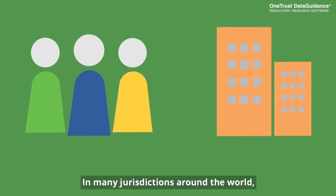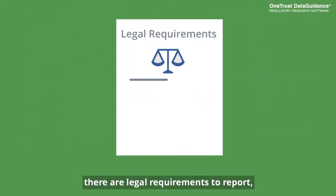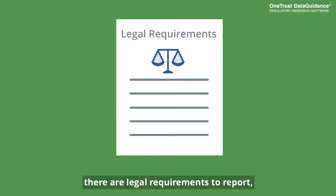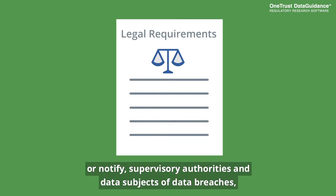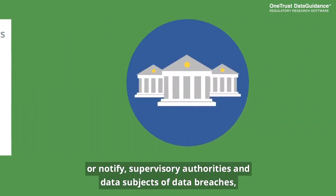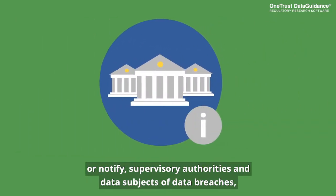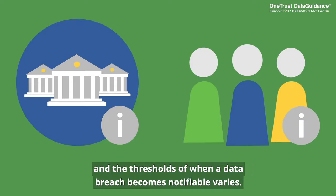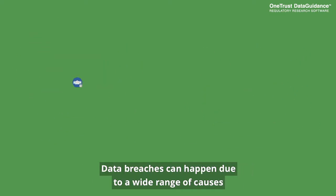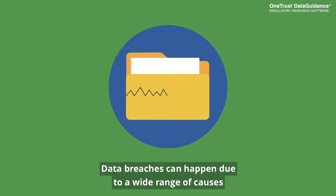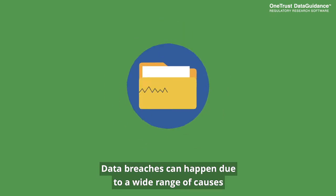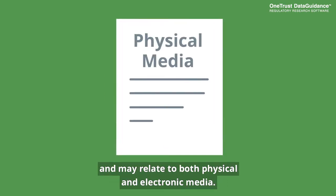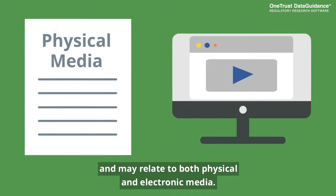In many jurisdictions around the world, there are legal requirements to report or notify supervisory authorities and data subjects of data breaches, and the thresholds of when a data breach becomes notifiable varies. Data breaches can happen due to a wide range of causes and may relate to both physical and electronic media.